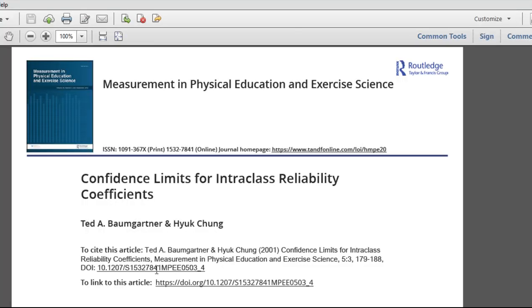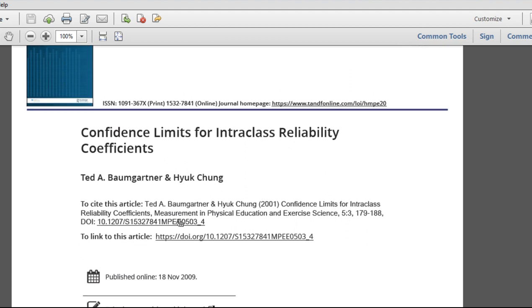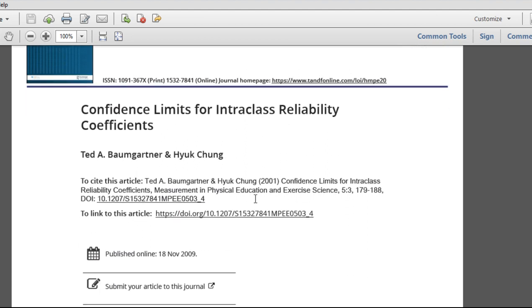Now the other reference that says SPSS does this is the Confidence Limits for Intraclass Reliability Coefficients by Baumgartner and Chung, 2001. I'll put these references in the description of the video so that you can just copy and paste that into your study if you need them.